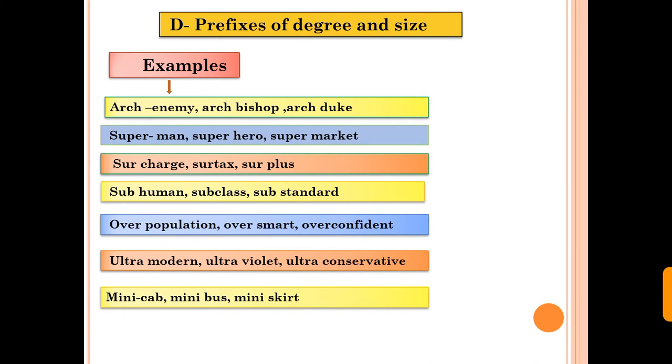The next type is prefixes of degree and size. Arch, super, sub, sur, over, ultra, mini. These are prefixes of degree and size. The first example of arch adds before enemy, so it gets arch enemy. Man, superman. Sur adds before charge, so it became surcharge. Human, subhuman. Population, overpopulation. Modern, ultra modern. Mini adds before car, bus, or skirt. Mini car, mini bus, mini skirt. It shows the size.